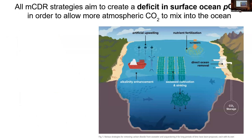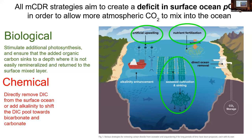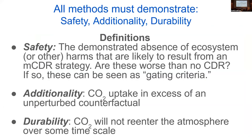To help our speakers today, just a quick background on some of the marine CDR strategies. We can break them down roughly into two flavors. The first is biological — stimulating carbon fixation in the upper ocean and allowing some of that to sink to depth, where we sequester that carbon. The second flavor is chemical, involving direct ocean removal and alkalinity enhancement.